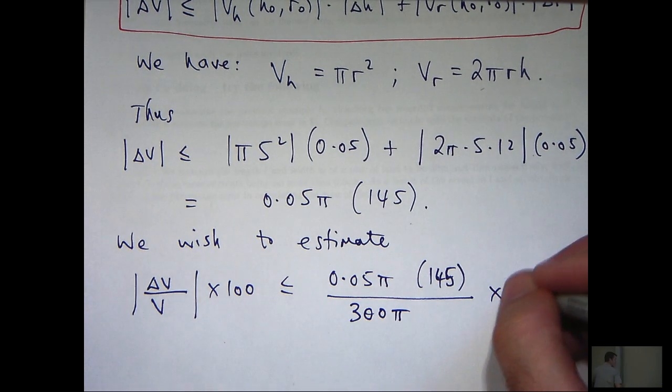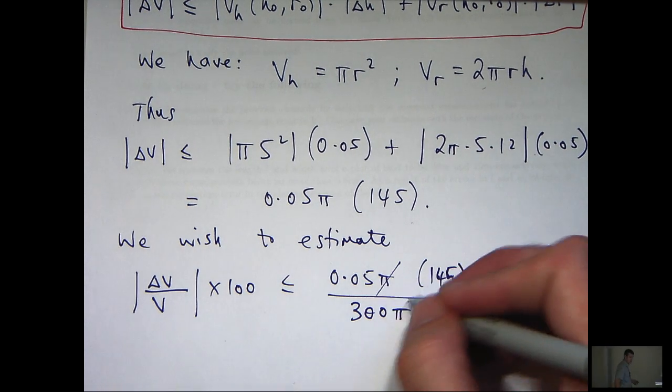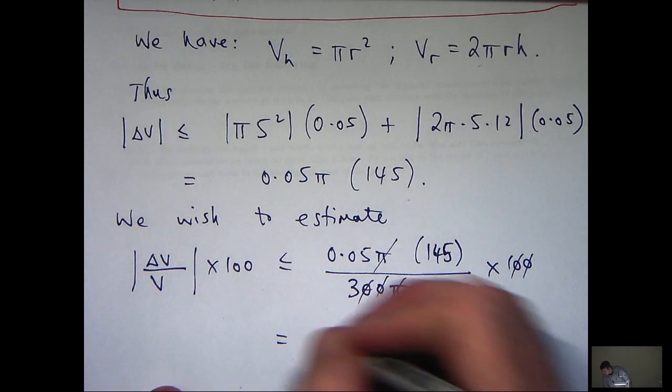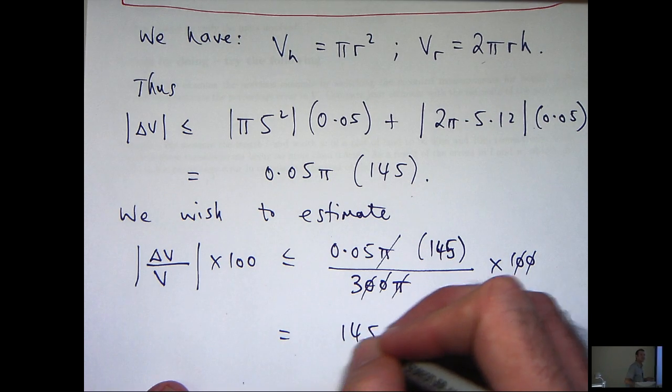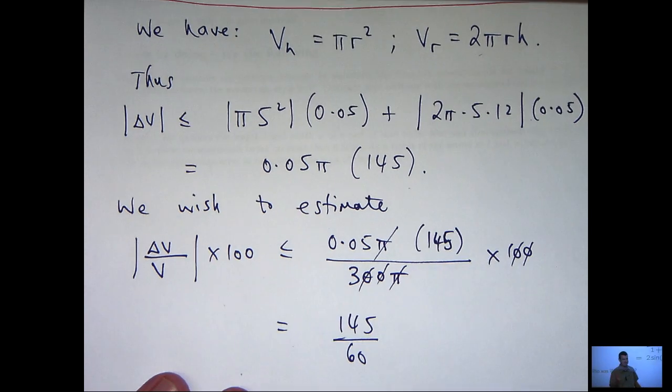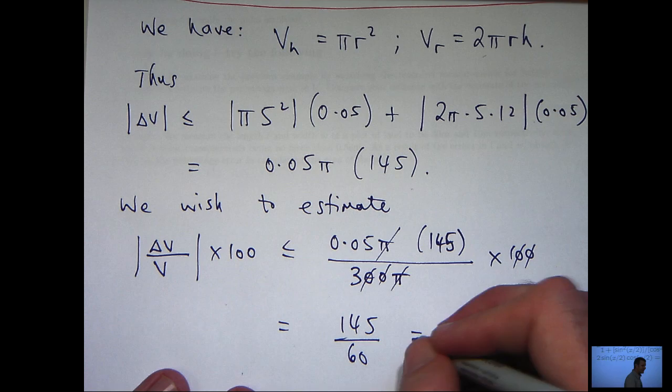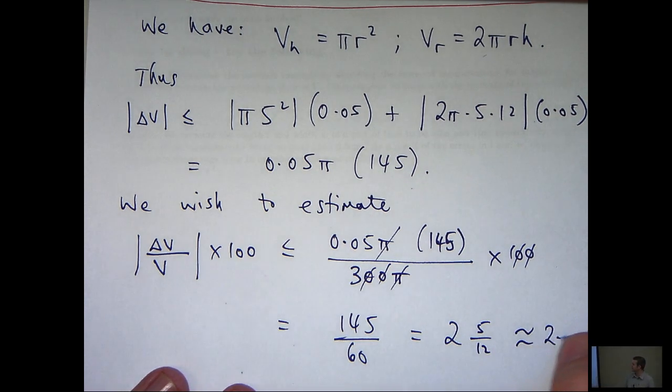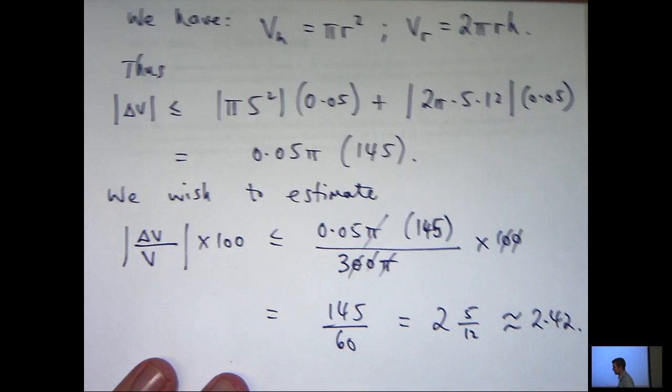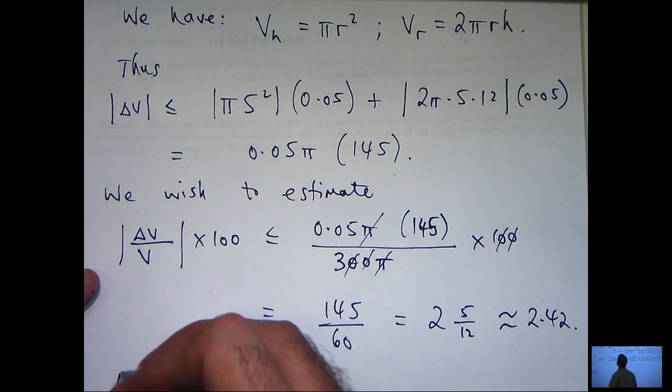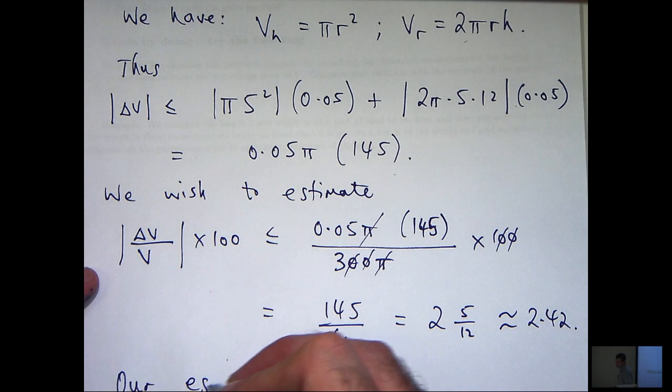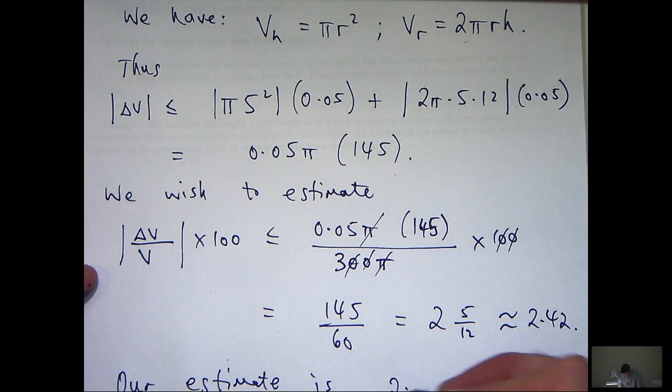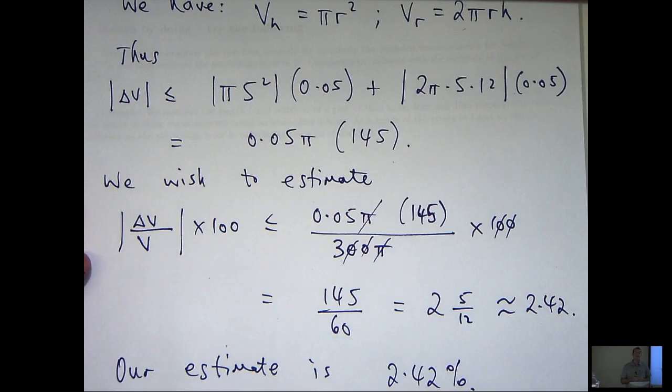And V evaluated, the volume at (h₀, r₀) is just going to be 300π. And I need to times this all by 100. So I can cancel off now. And I can simplify it and I'll get down to the following. And this is actually 2 and 5 twelfths. That's approximately equal to 2.42. So our estimate is 2.42%.